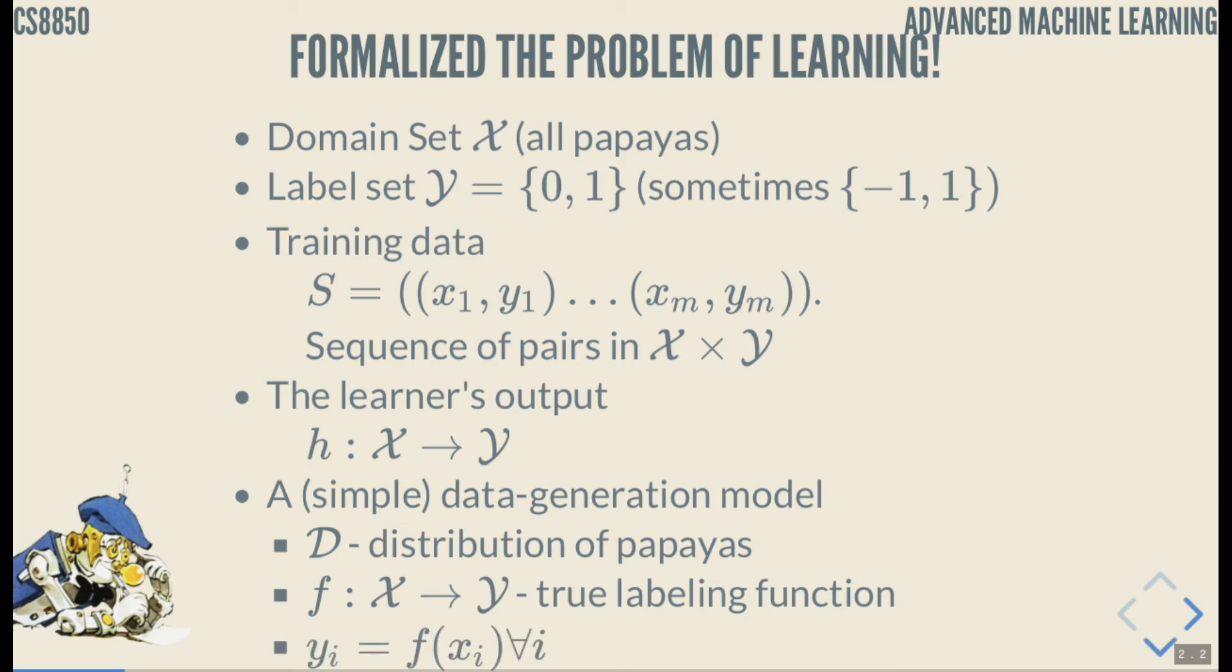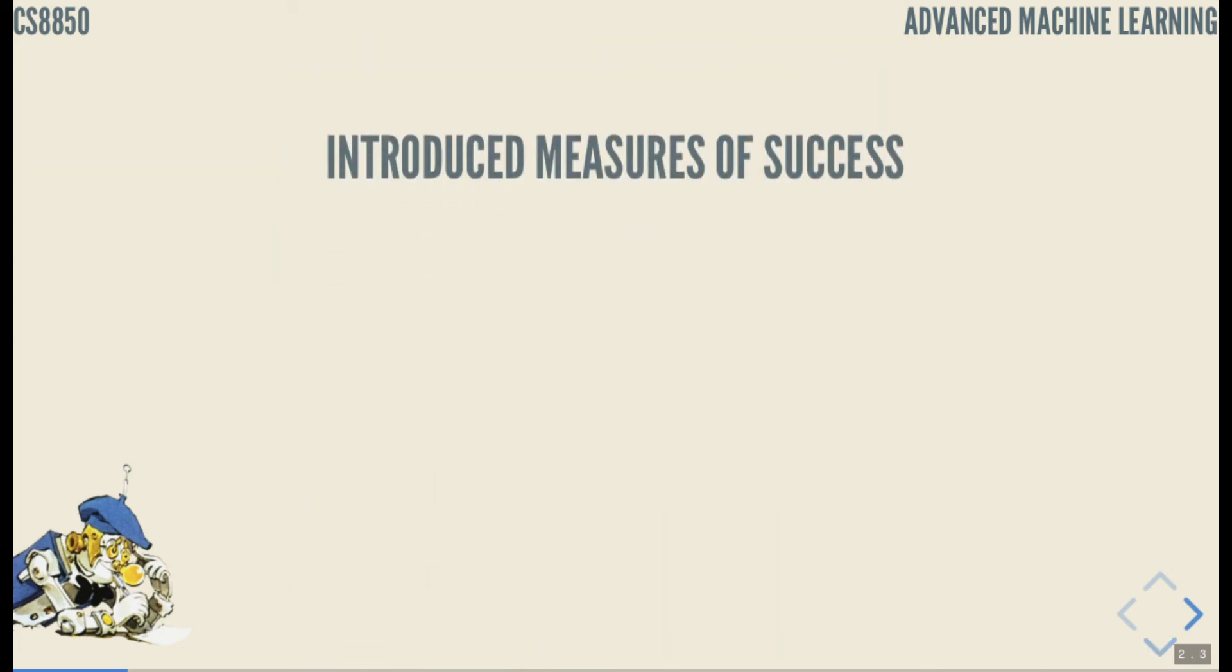We also assume that correct labeling, true labeling function exists, it's just unknown to the learner. And what that means is that for all i, a sample x_i supplied to this function will get the true label assigned. So the learner's goal is to figure out this function f. That was the formalization of the learning problem.